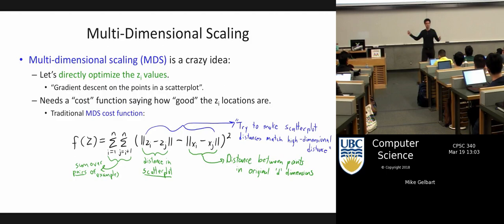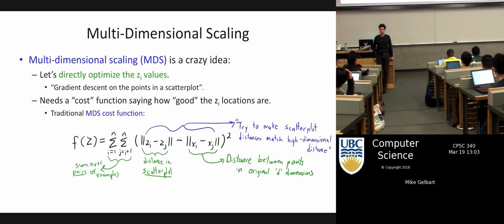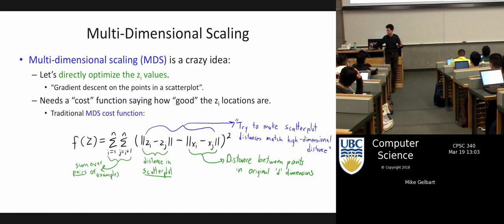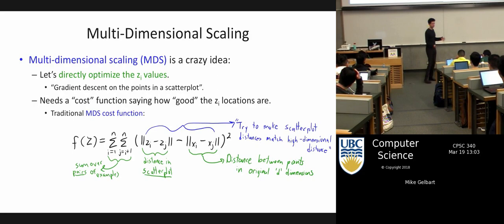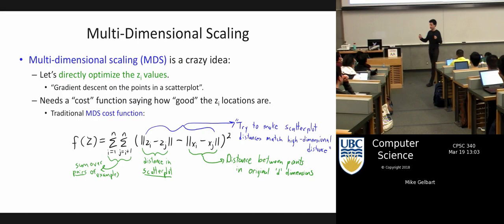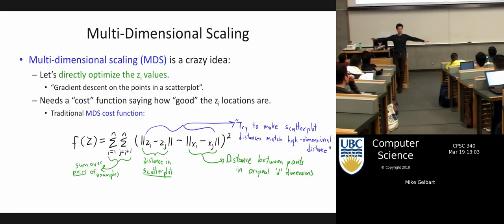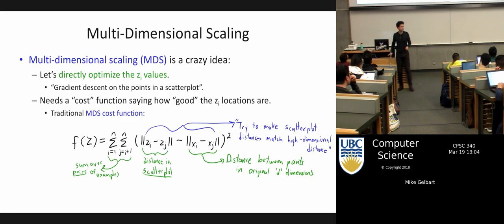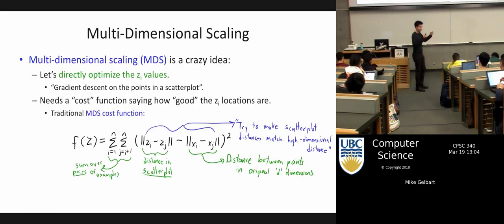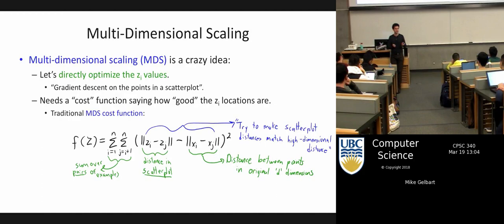We compute xi minus xj — using some sort of distance, for example Euclidean distance — that's how far the two points are in the original space. That's a D-dimensional vector minus another D-dimensional vector, taking some sort of norm. Then the same thing with Z: for that same pair of points in the new space, how far apart are they? So maybe I'm projecting onto the plane — two points are this far apart, I project them down, now they're this far apart. The third minus sign is the difference between those two distances.